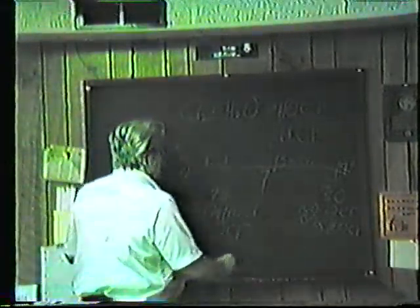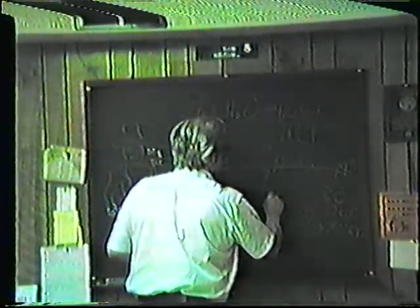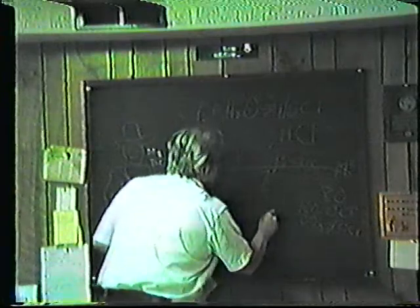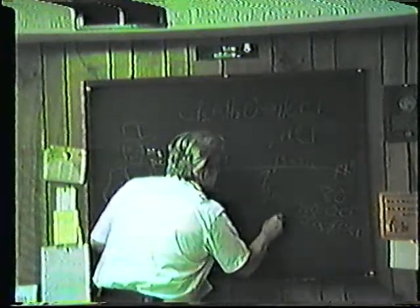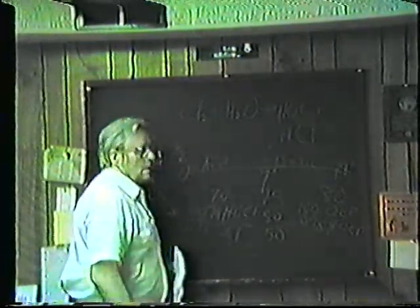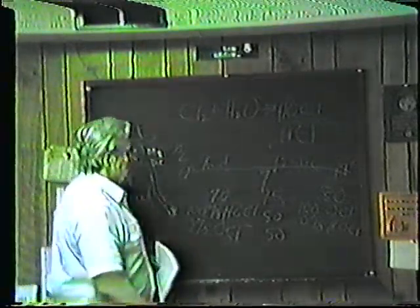Halfway between, at a pH of 7.5, we get 50% of each. This is supposed to be the ideal point of operation.